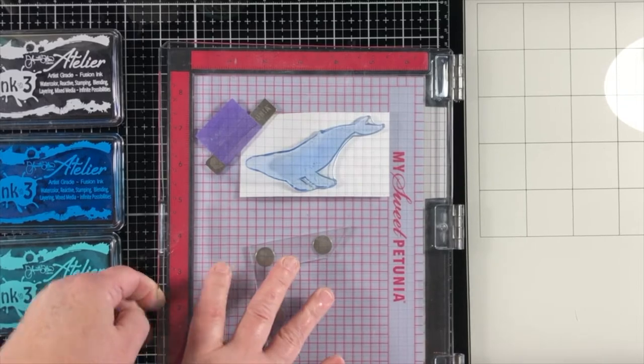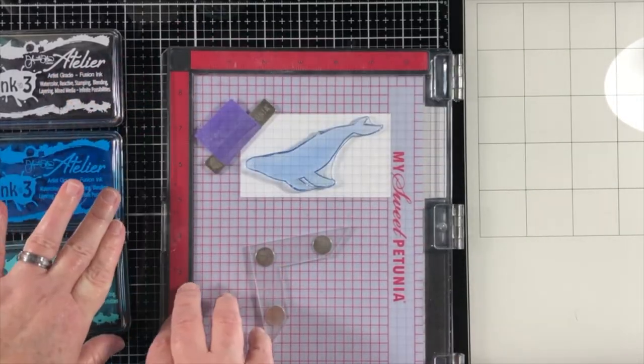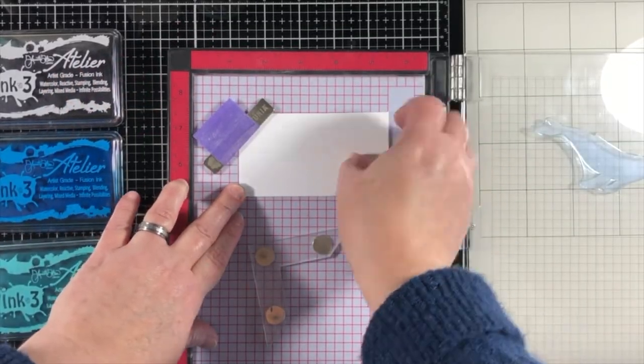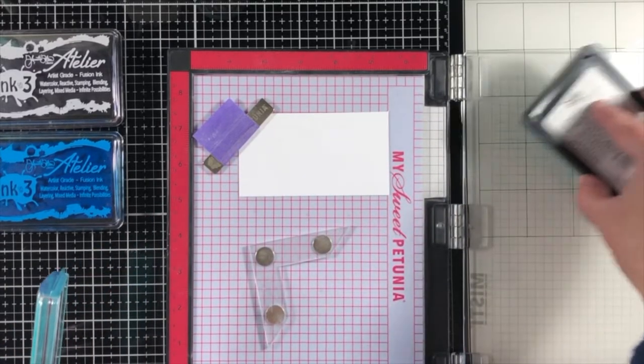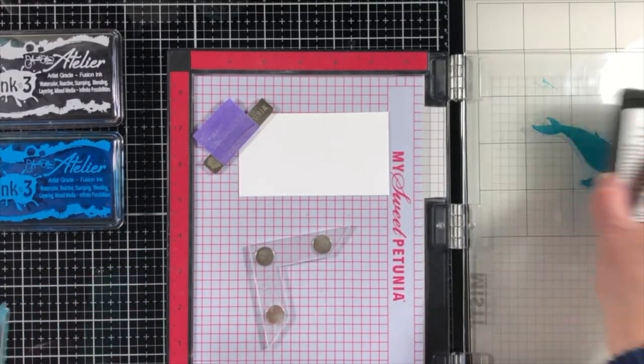So now I've gone back to a piece of 80 pound cardstock, and I'm going to be stamping this whale from Hero Arts. And it's a color layering stamp set.